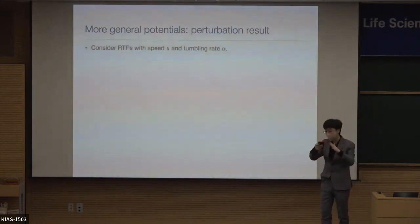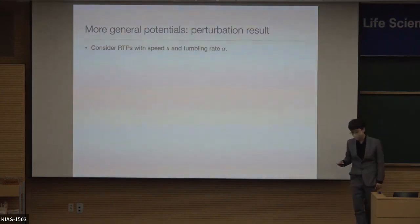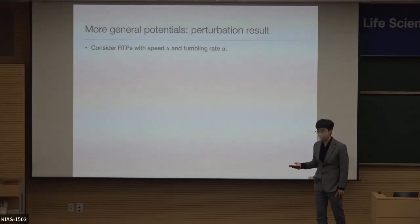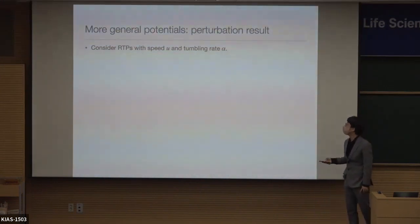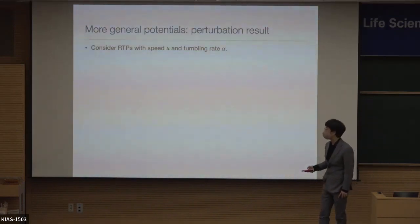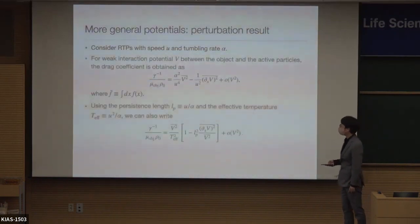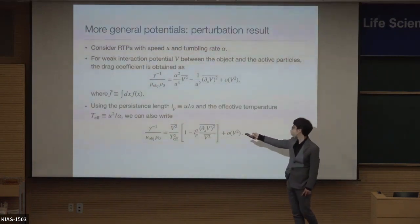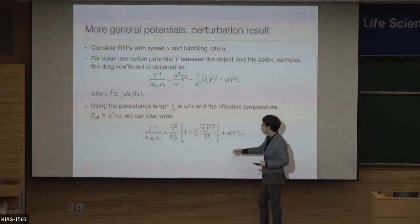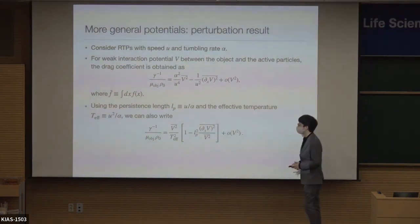So far I showed a specific example of a triangular potential, but in principle we can solve the equations for any potential, and we've seen similar things for sinusoidal and harmonic potentials. For a very general potential, we can do perturbative analysis assuming small potential strength V. You can calculate the drag coefficient in closed form, and when the run length is sufficiently large or the repulsion sufficiently strong, you get a negative drag coefficient for a general potential in the weak potential limit.